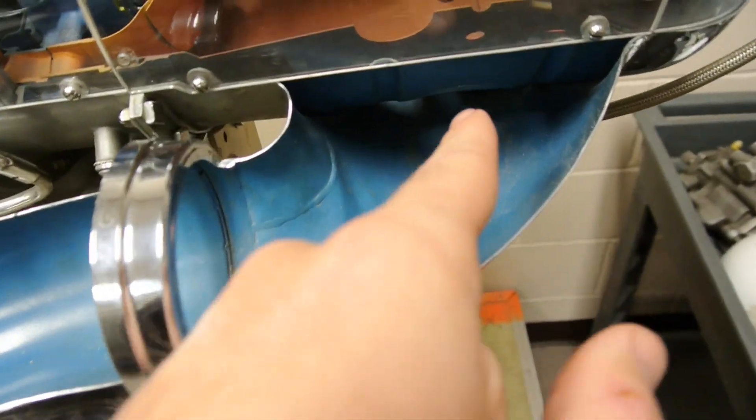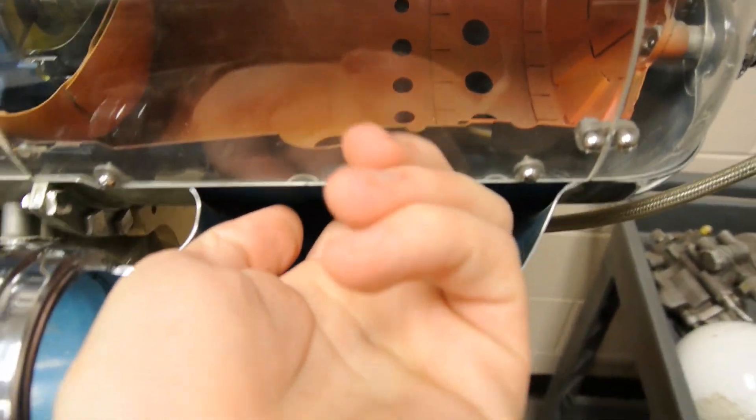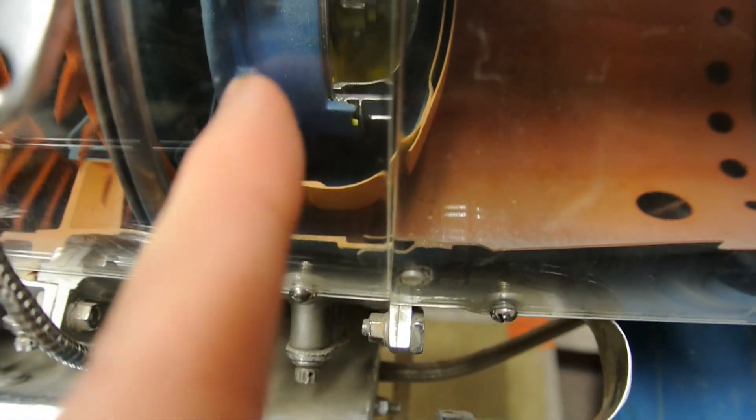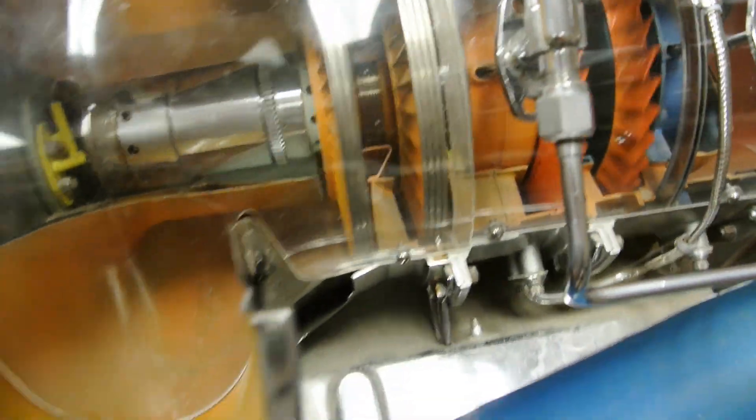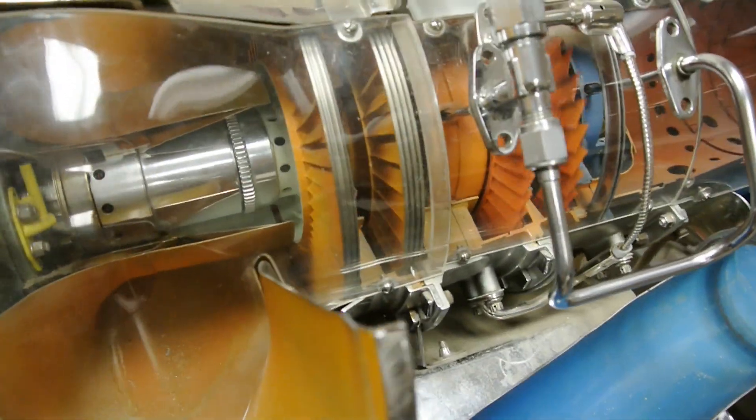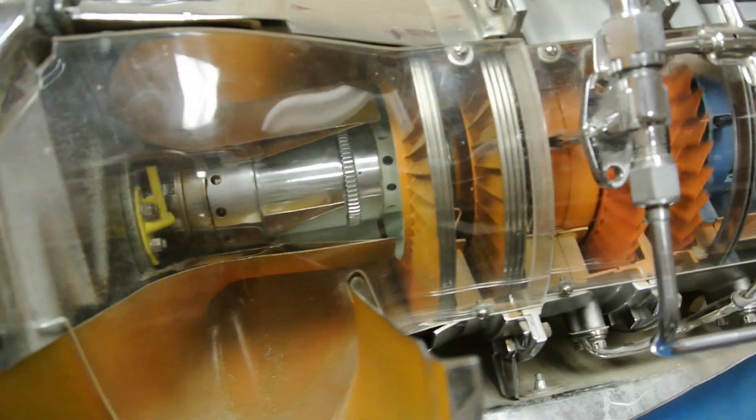So you can see the blue air travels underneath this combustion chamber and along the sides of it here, and then on the opposite side of it. It keeps all those components cool, preventing the heat from causing damage or melting some of the types of metal in there.